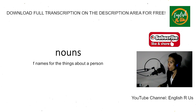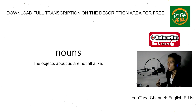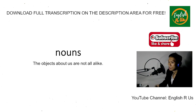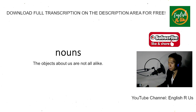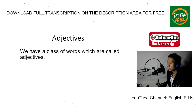But primitive man soon felt the need for other classes of words. The objects about us are not all alike. For example, we have a word for man, but when we say 'man' that is not sufficient to describe the many different kinds of men. There are tall men, short men, white men, black men, strong men, weak men, busy men, lazy men — there are all sorts of men in the world.